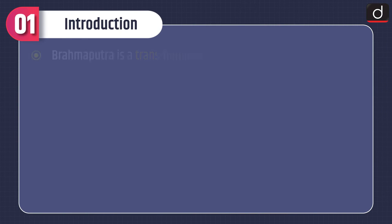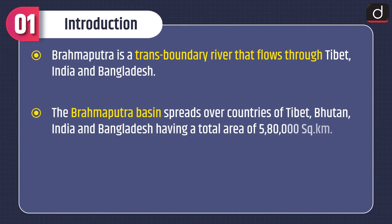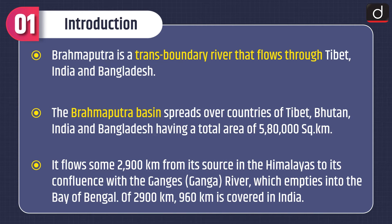Moving on to the introduction: Brahmaputra is a trans-boundary river that flows through Tibet, India, and Bangladesh. The Brahmaputra basin spreads over Tibet, Bhutan, India, and Bangladesh, having a total area of 5,80,000 km². It flows some 2,900 km from its source in the Himalayas to its confluence with the Ganga river, which empties into the Bay of Bengal. Of the 2,900 km, 960 km is covered in India.